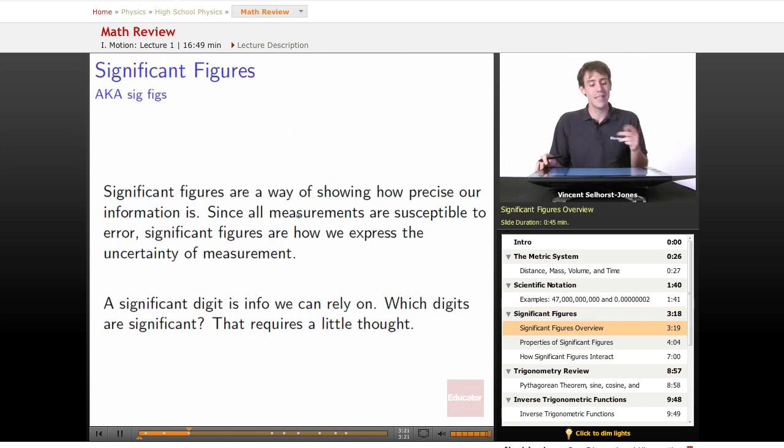Significant figures, also called sig figs, are a way of showing how precise our information is. All measurements are susceptible to some amount of error. Even with a really fine ruler, it's hard to tell the difference between one one-hundredth of a millimeter to the left or right. There's always some judgment call where you might be slightly wrong—there's always uncertainty in every measurement. A significant figure expresses how certain we are of our measurement, or what the uncertainty is. It says how much we can trust our information.